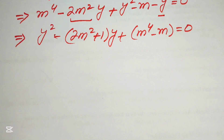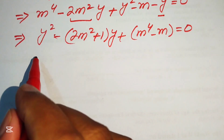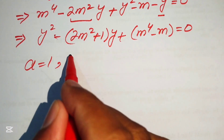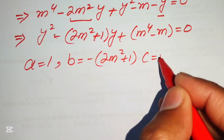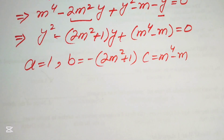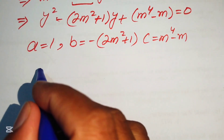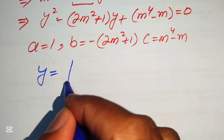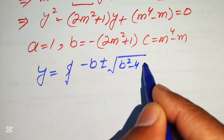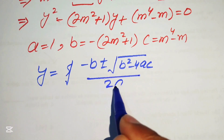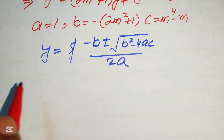We solve this quadratic equation using the quadratic formula. The coefficients are: a = 1, b = -(2m² + 1), and c = m⁴ - m. The quadratic formula is y = (-b ± √(b² - 4ac)) / (2a).